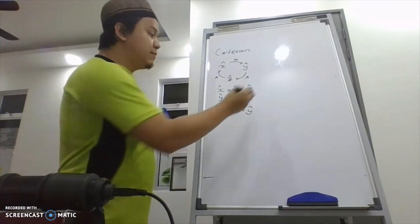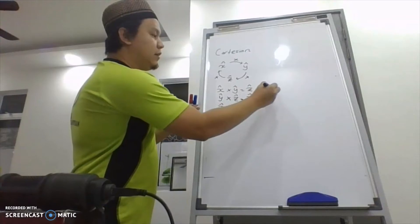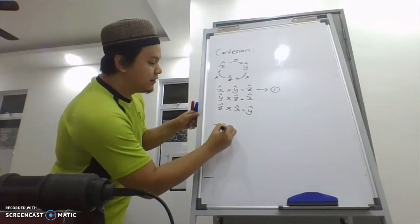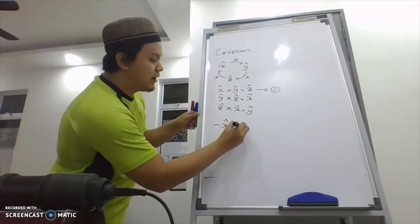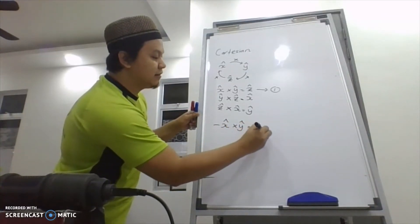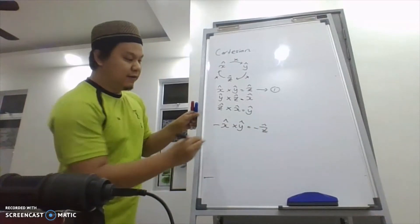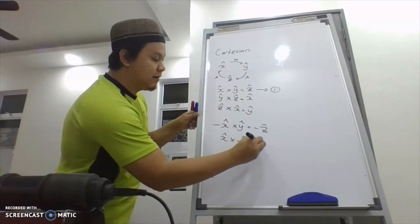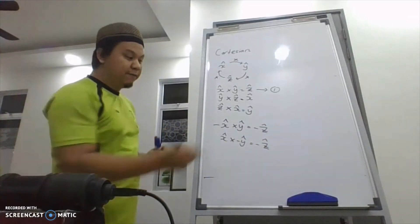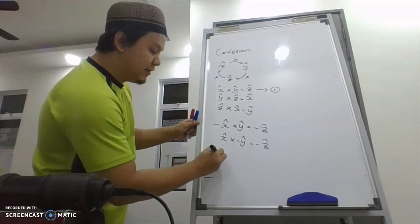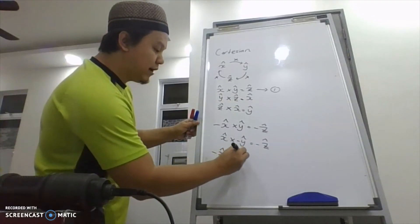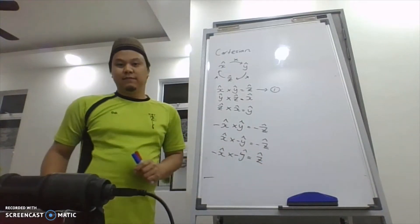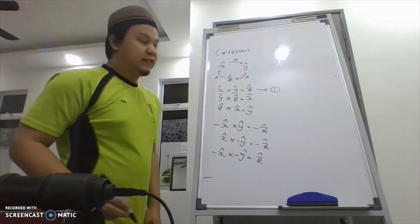If one of these vectors is negative, the answer should be negative. For example, negative x cross y gives negative z. If x cross negative y, the answer is also negative z. But if both are negative — negative x cross negative y — you get positive z. This is for Cartesian coordinates.